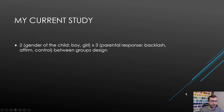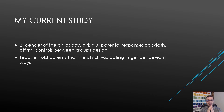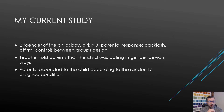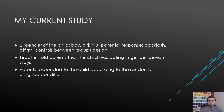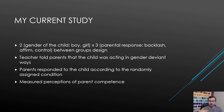In my current study, I am testing a two by three between-groups design in which I presented people with a situation where a teacher told parents that their child was acting in gender-deviant ways and that the teacher was concerned about the child. The parents then responded to the child according to randomly assigned conditions: they either backlashed, affirmed, or were in a control condition where we didn't specify how the parents responded. We also manipulated the gender of the child as being a boy or a girl to examine whether that impacted participants' ratings of parents' levels of competence.